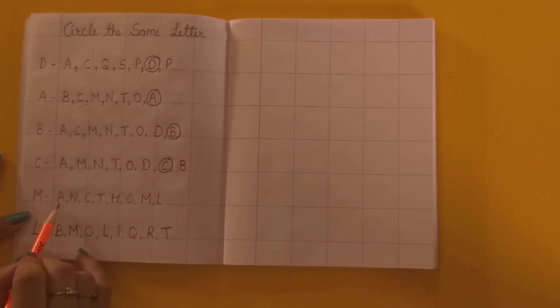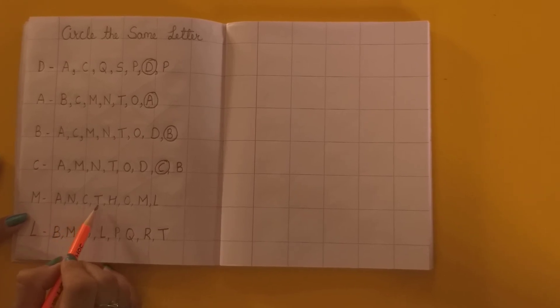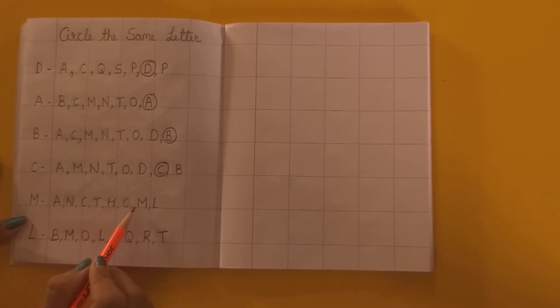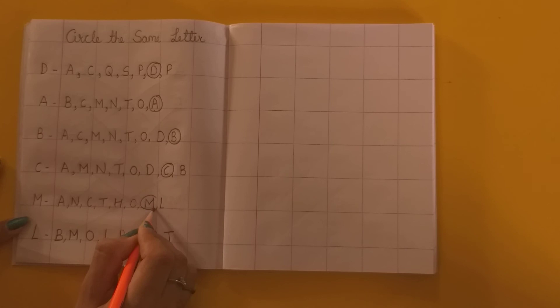Now M. M kidhar chupke baitha hai? Dekho toh. Yeh T. Yeh H hai. Yeh O hai. Yeh raa M. Aagya meiree hat mein M.